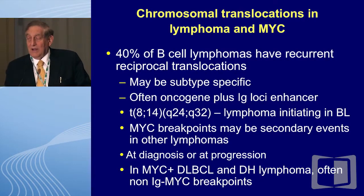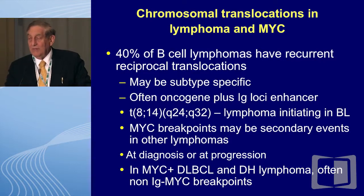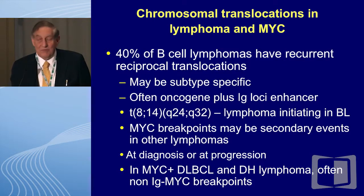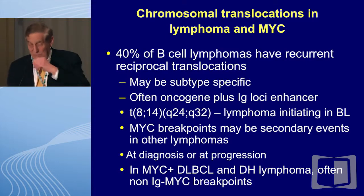There are a number of chromosomal translocations in lymphoma, and actually about 40% of B-cell lymphomas have recurrent reciprocal translocations. They may be subtype specific. It's often an oncogene plus an Ig loci enhancer — the promoter section of the 14th chromosome, which is the promoter section of the heavy chain. And everyone is familiar with the 8;14 classical combination, which you see in Burkitt's lymphoma.